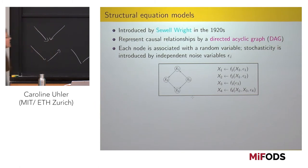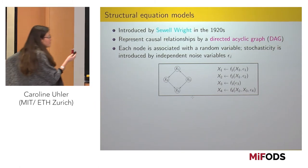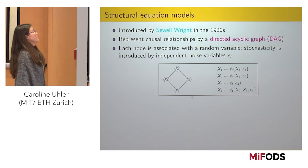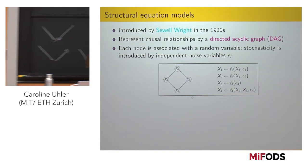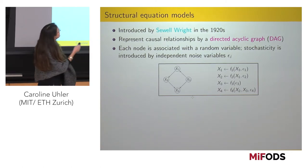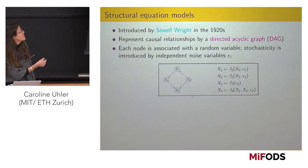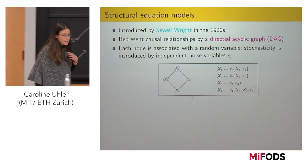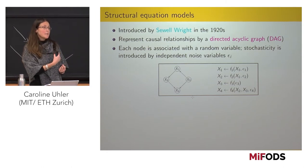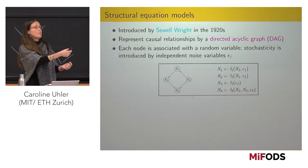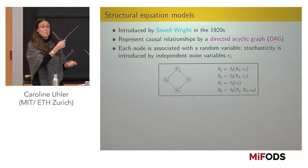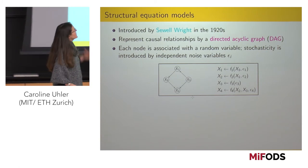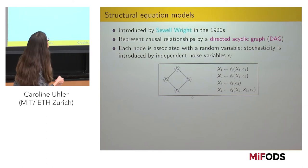Sewell Wright already developed in the 1920s a framework for thinking about causality using graphs. It's a very intuitive framework. We're only going to allow directed acyclic graphs — a particular class of directed graphs. Why no directed cycles? Because if you think of causality, it can only be forward in time — you cannot cause something that came before you, hence no directed cycles. Nowadays one can relax these assumptions, but let's do it in the simplest setting.